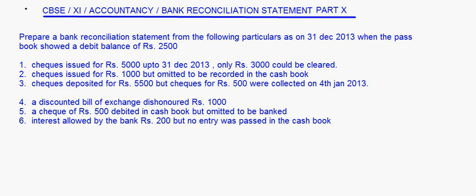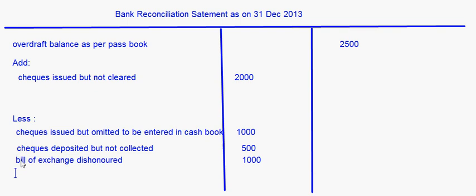A check of Rs. 500 debited in the cashbook — in the cashbook you have debited the amount, meaning the cashbook overdraft balance has come down. The check has been received and debited, but you have not banked it. So in the bank, the overdraft balance is still more, while in the cashbook it is less. This should be subtracted: Check debited in cashbook but not banked — Rs. 500.